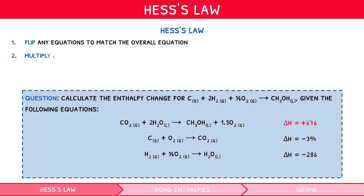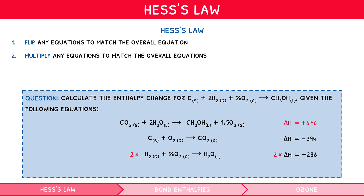Second, multiply any equations to match the desired quantity of products and reactants. In the first and second equations, nothing is done. In the third equation, there is only one hydrogen but two are required, so we multiply the equation and its enthalpy by 2, to give minus 572.